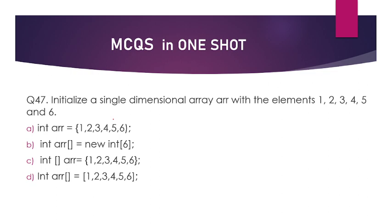Initialize a single dimensional array with elements 1, 2, 3, 4, 5, 6. You need to initialize the array with values. Options include: int ar = {1,2,3,4,5,6} (no square bracket — wrong syntax); option B has an issue; option C is int[] ar = {1,2,3,4,5,6}. The square bracket can be placed after int or after ar — both are valid. So the answer is option number C.